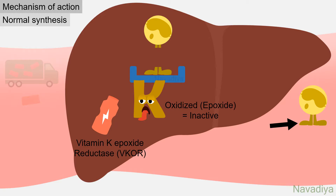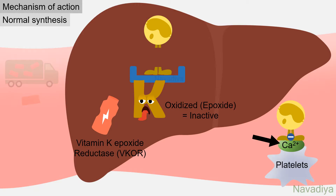Carboxylation provides a negative charge to the glutamic acid residues. This negative charge is essential for binding with calcium, which associates the clotting factor to the membrane phospholipids of the platelet, allowing its activation and subsequent participation in coagulation. So carboxylation is very important for the clotting factor to do its normal job.